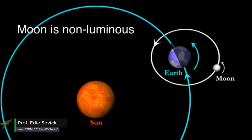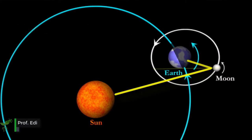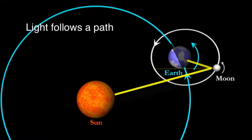The moon is non-luminous, but you see it because sunlight is reflected from its surface to the Earth's surface. So light has a path.